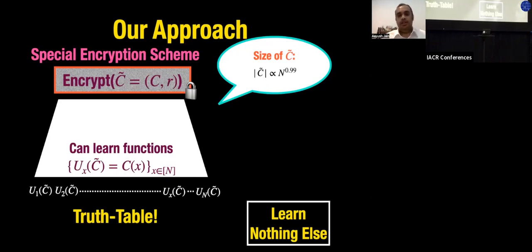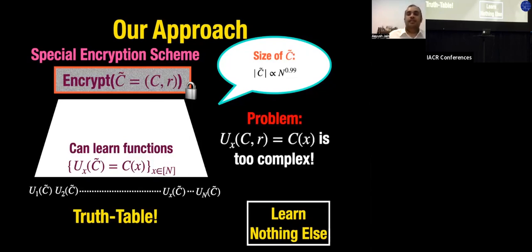In other words, if you can construct an encryption scheme that lets you learn the truth table and nothing else, with small size and small running time, you'd be done. Unfortunately, the circuits U_x(C̃) = C(x) are quite complex — they run C itself — so we haven't simplified anything, and current techniques don't let us construct such schemes directly.